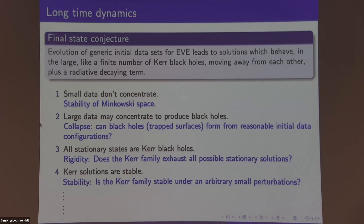We would expect all stationary states to be Kerr black holes — the only candidates for the final state. Since we expect Kerr black holes as the final state, it is natural to expect Kerr solutions to be stable: a small perturbation of the Kerr initial data should lead to a nearby black hole. In this talk I focus on the stability of Kerr. There are even more problems related to the final state conjecture, and many are related to the interior region — the black hole region of the spacetime.